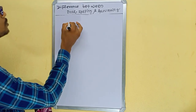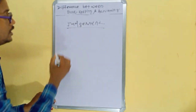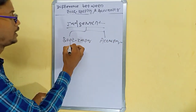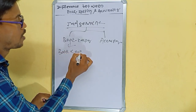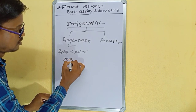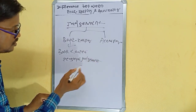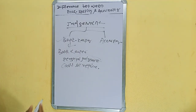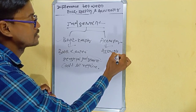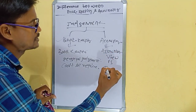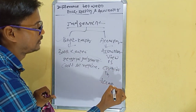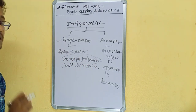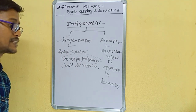The next term is judgment. In bookkeeping, the bookkeeper's personal judgment is not required. But the accountant's view is essential in accounting.